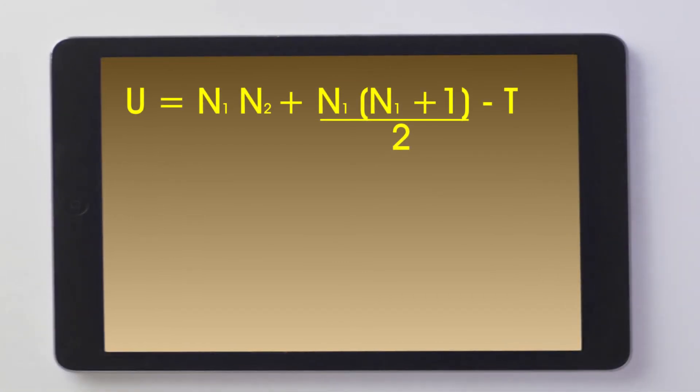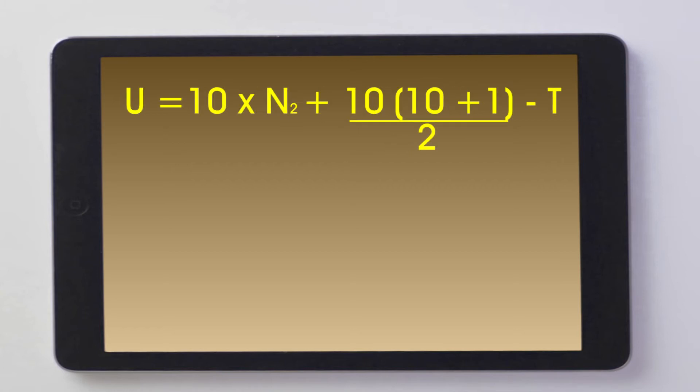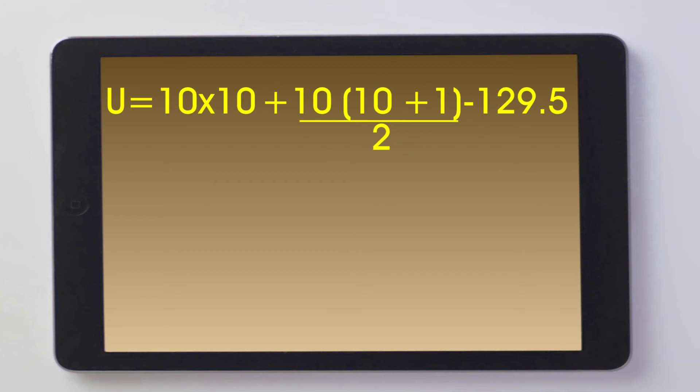The number of participants in condition 1 was 10 and the number of participants in condition 2 was also 10. And our T value for our second condition was 129.5.